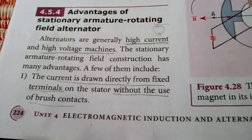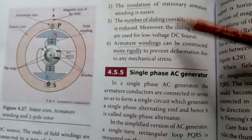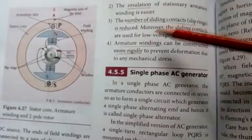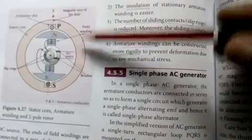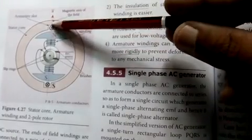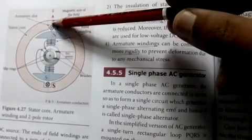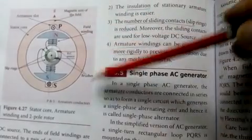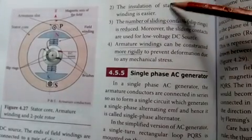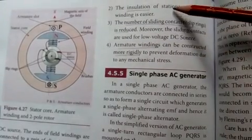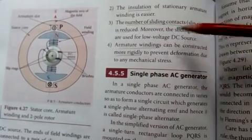Second, the installation of stationary armature winding is easier. As you can see in the diagram, this is the armature slot and the armature coil. The installation is easier, and this also helps to prevent the leakage of current.